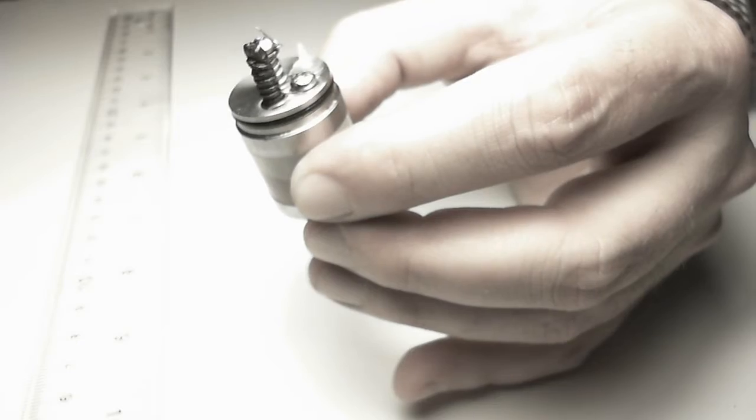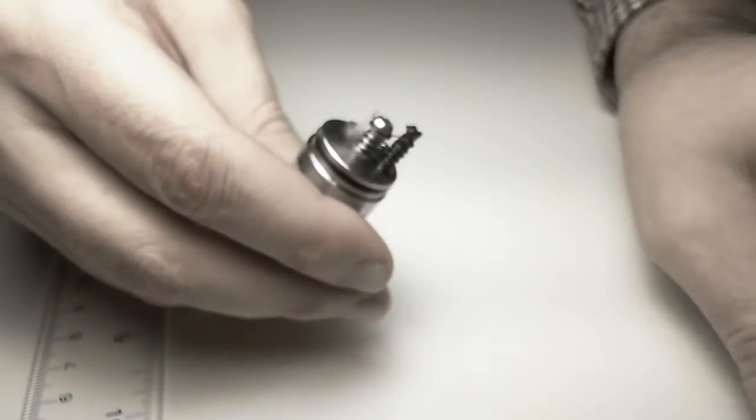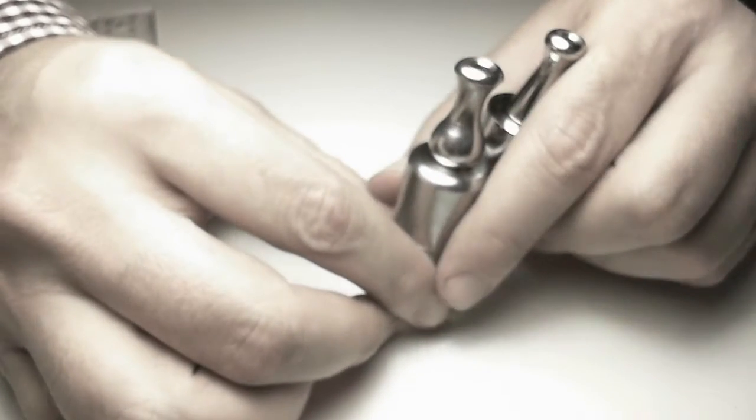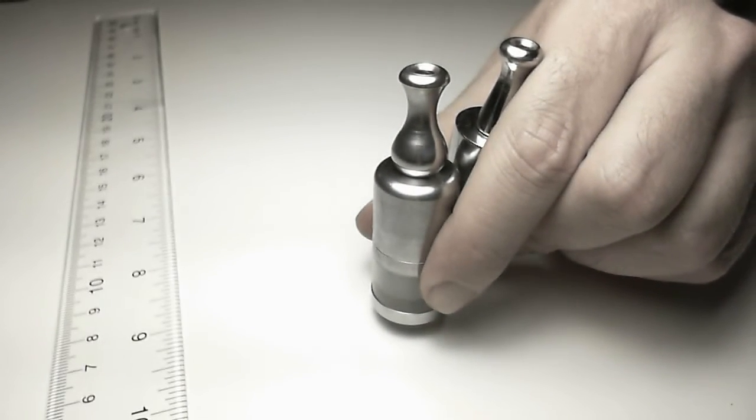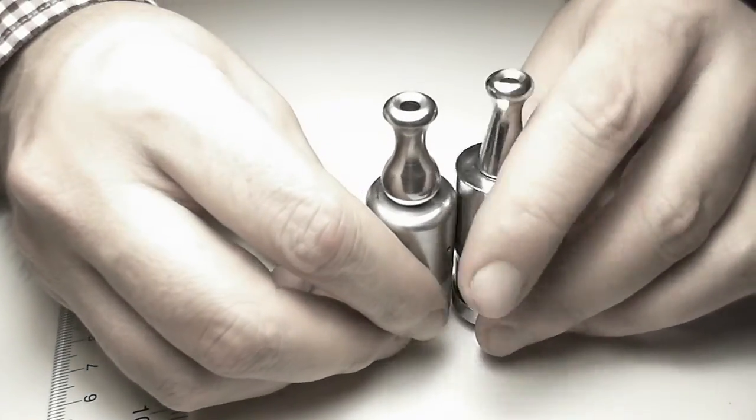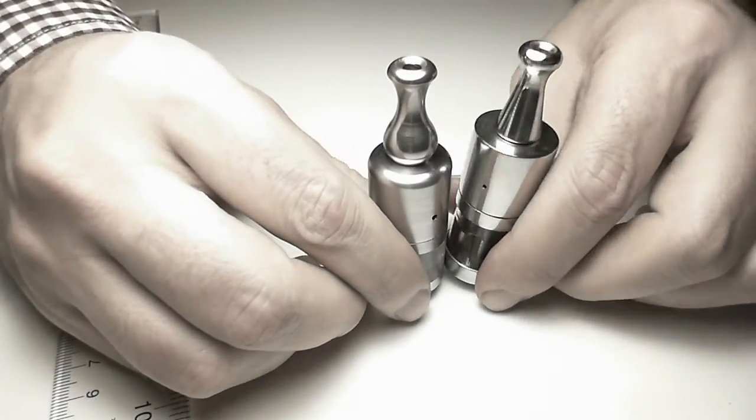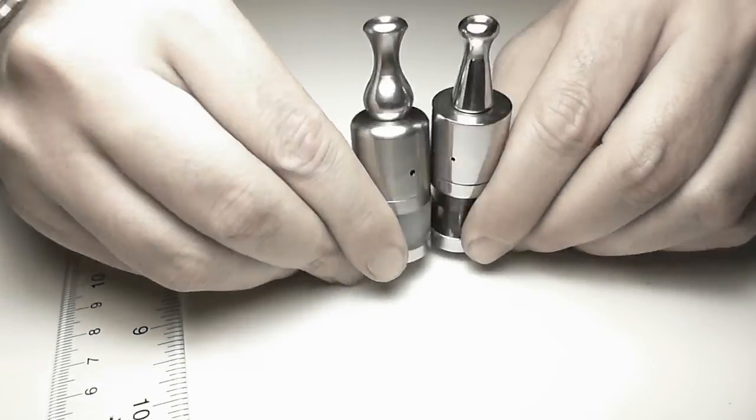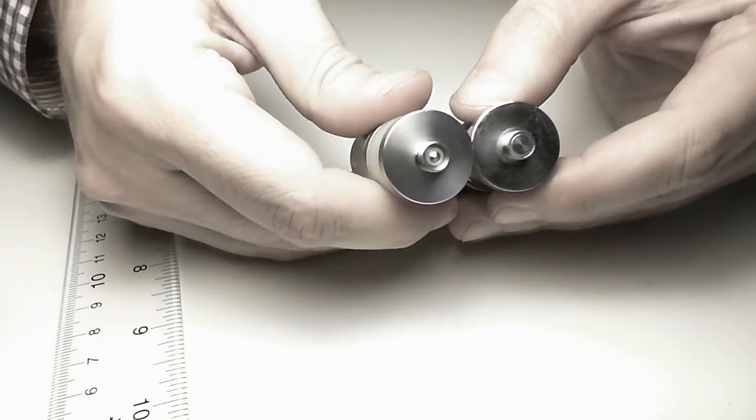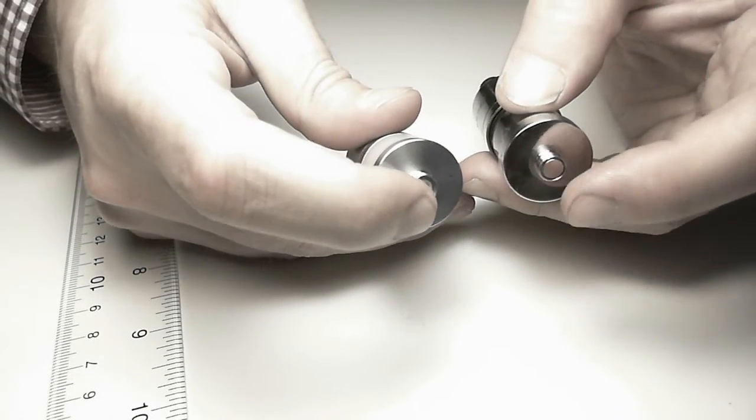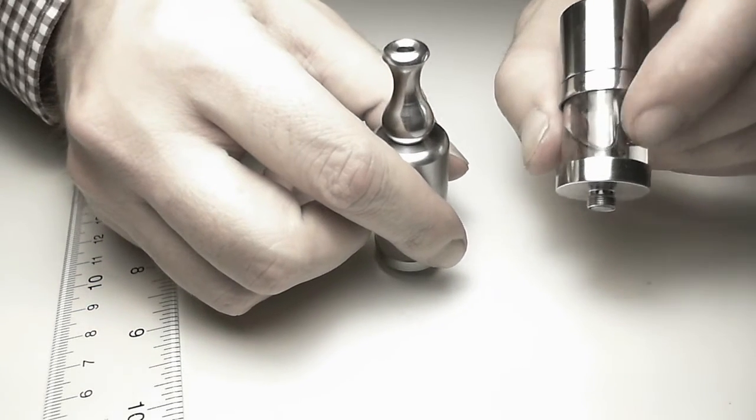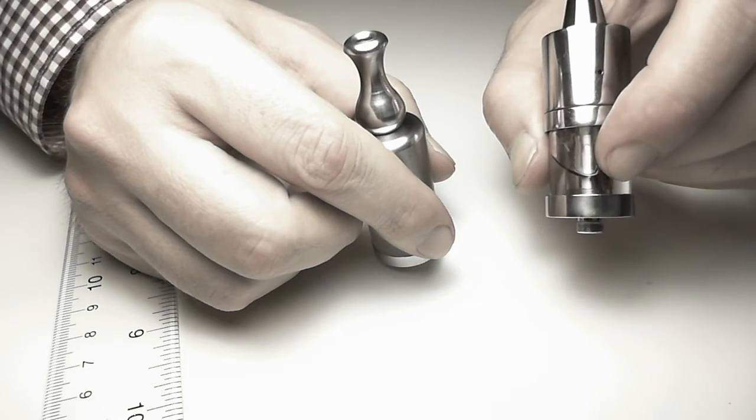Let's take a look at the AGI atomizer and compare the dimensions. Dimension-wise, the AGI is longer than the Smoke Tech RSST but slightly narrower. It doesn't have any adjustable 510 connection in the middle. It has a classic glass tank—I think it's not glass but some kind of plastic.